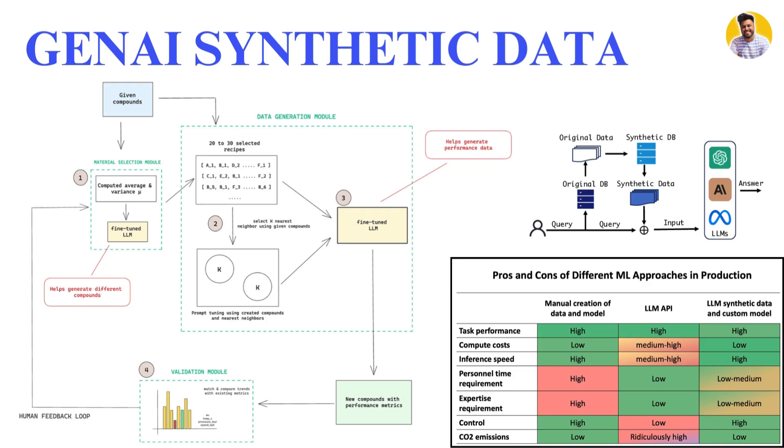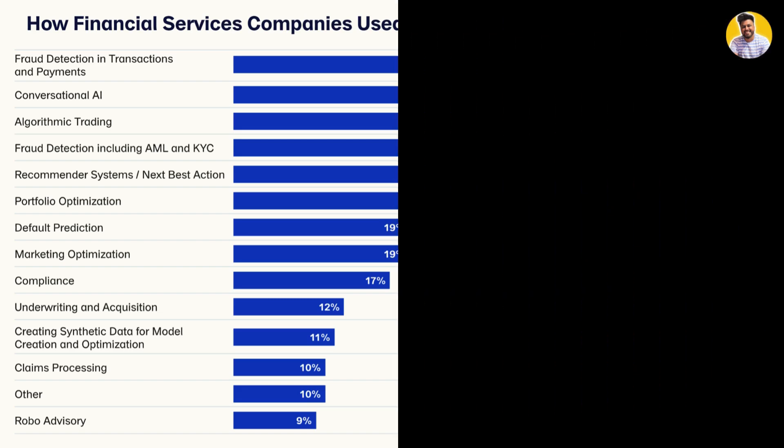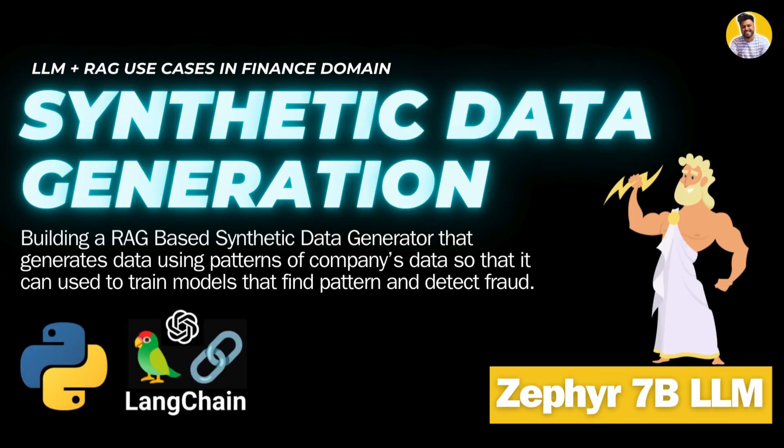Gen AI can use RAG or vector DB to store your own data, and large language models can generate synthetic data using the stored data patterns. As I promised, this is our next project from this list, building with the help of Mistral fine-tuned large language model called Zephyr 7B LLM.